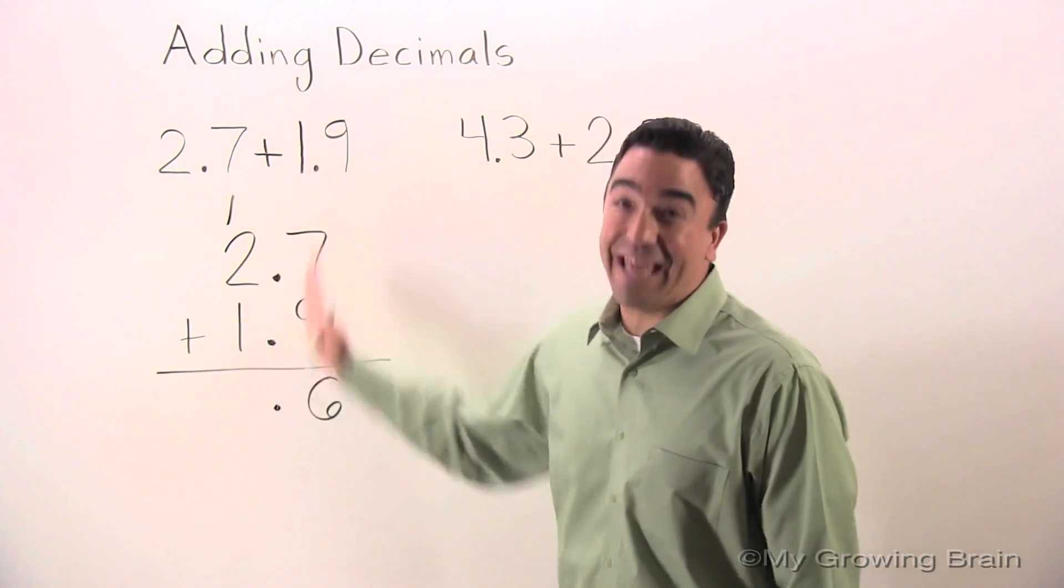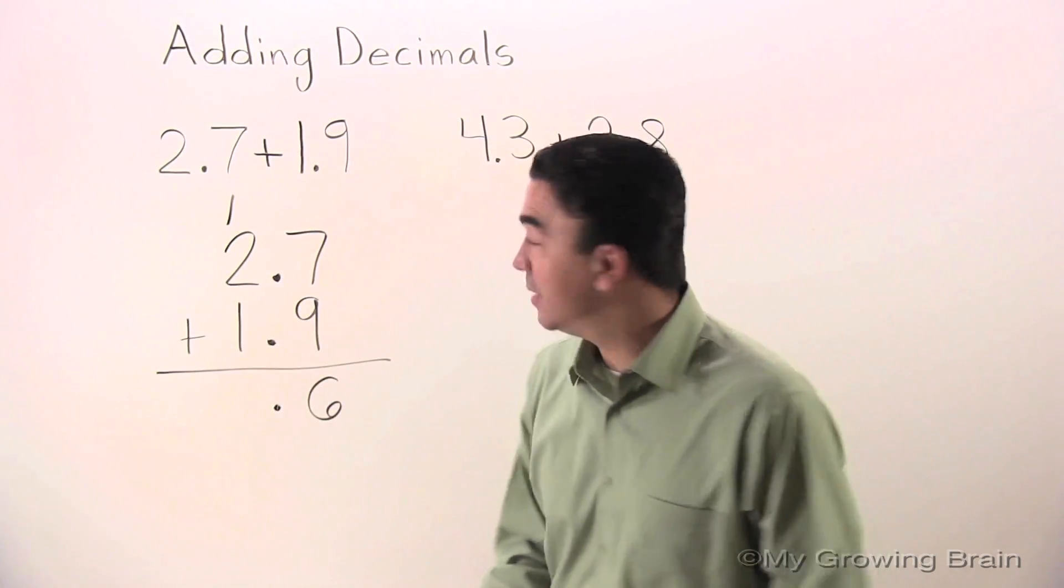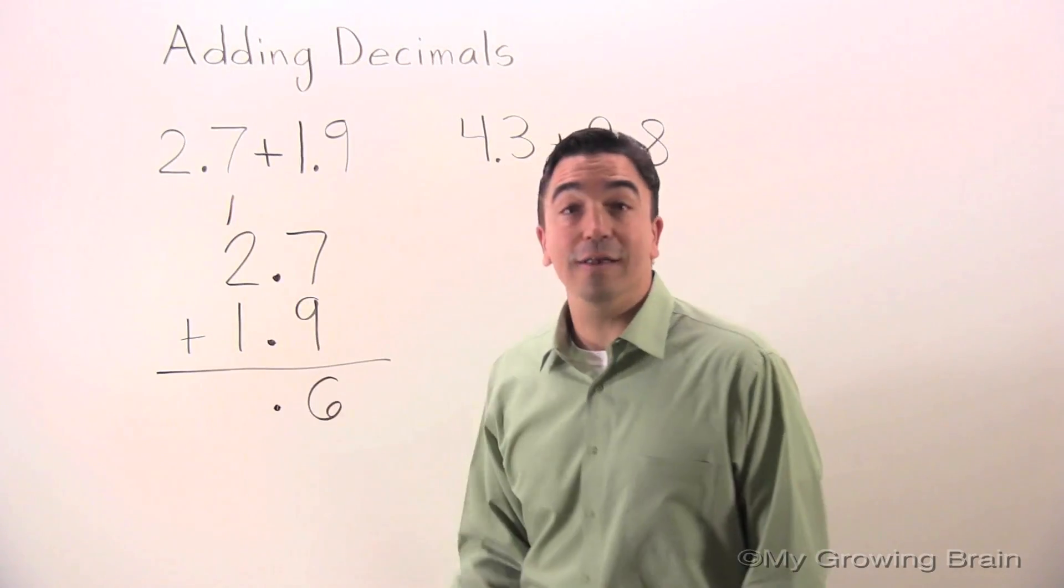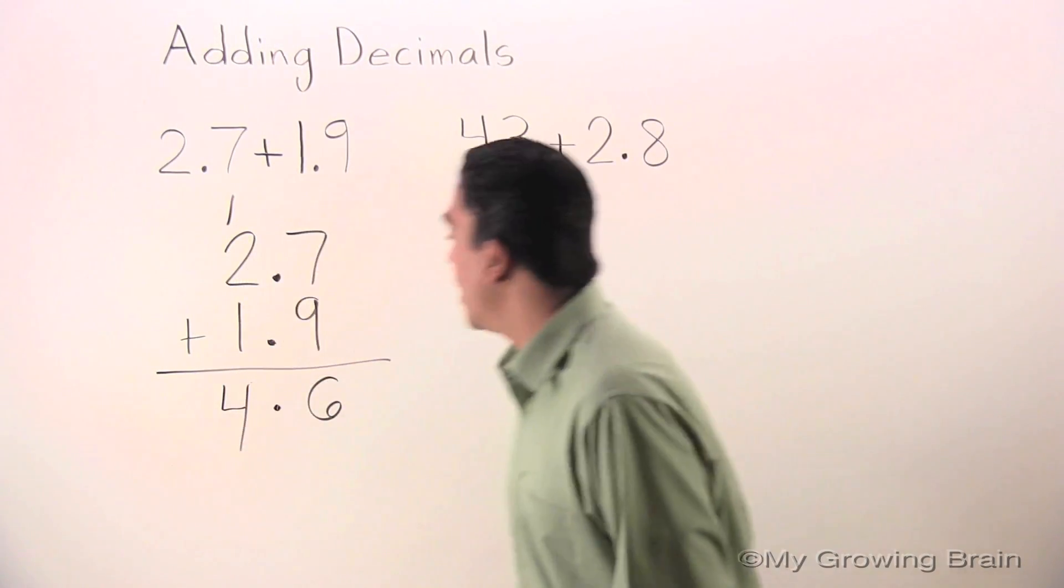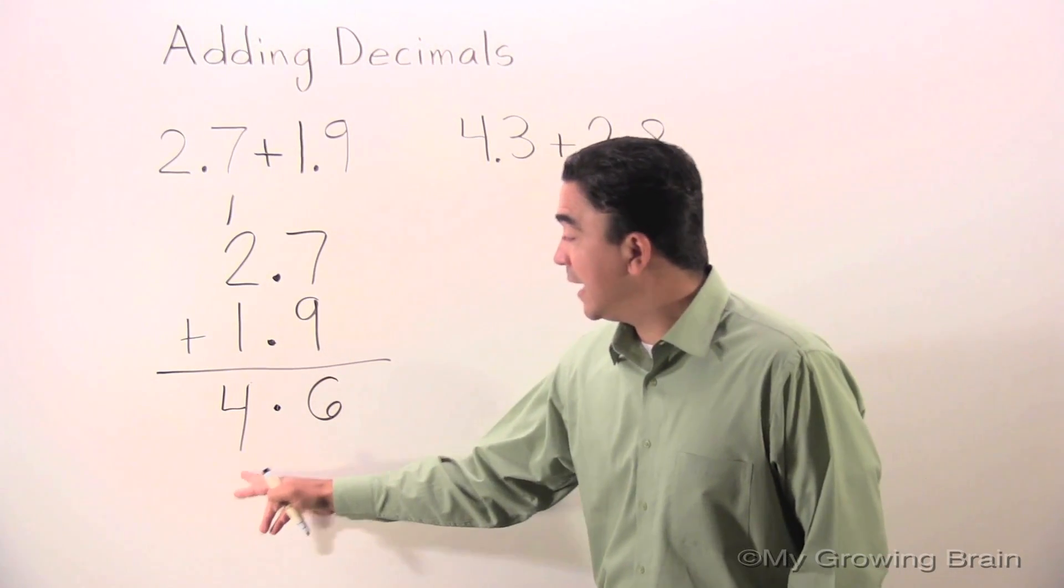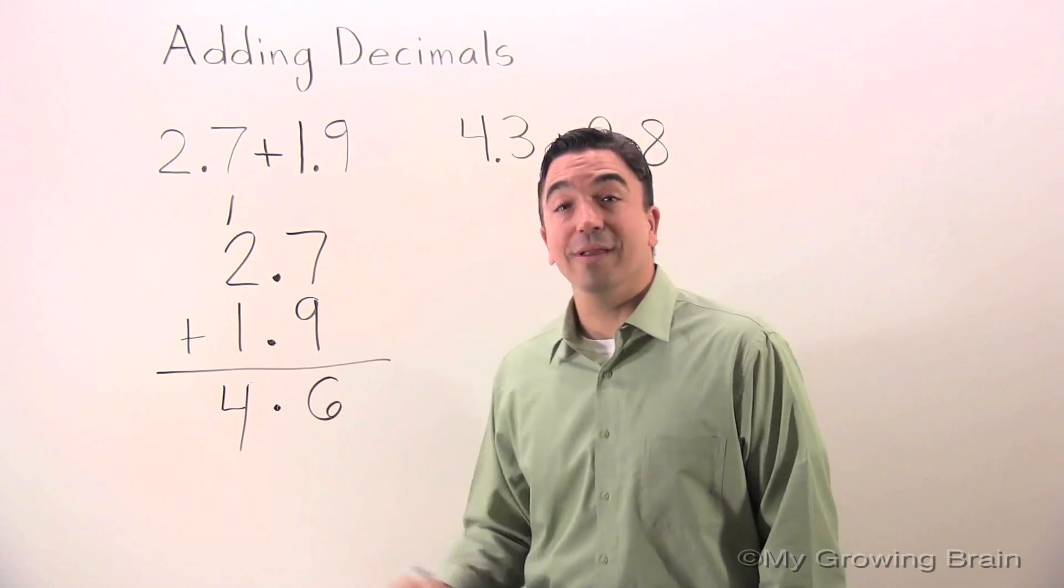Now we add the ones column. 2 plus 1 is 3. 3 plus 1 is 4. Our answer is 4 and 6 tenths or 4.6.